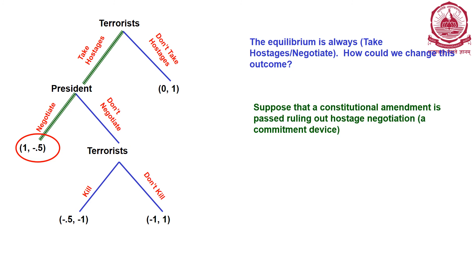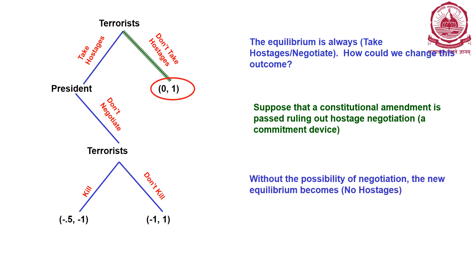Now suppose a constitutional amendment is passed ruling out hostage negotiation — the government commits to never negotiating. The negotiate option is now ruled out. In the sub-game, terrorists know that if they take hostage, the president cannot negotiate; the terrorist's outcome is minus 0.5 from killing. Compared to zero for not taking hostage, not taking hostage is preferable. So without the possibility of negotiation, the new equilibrium becomes: terrorists do not take hostage. This shows how commitment can change equilibrium outcomes.